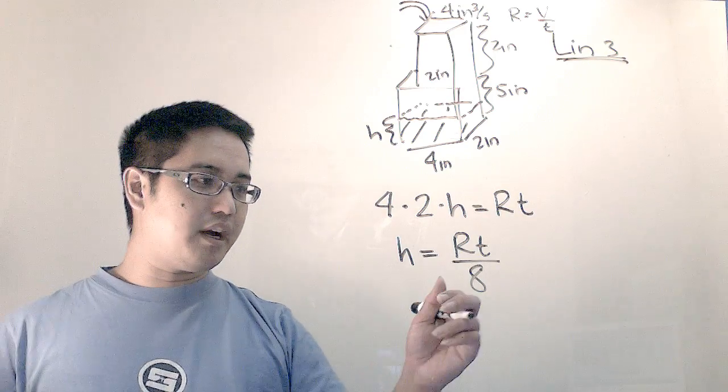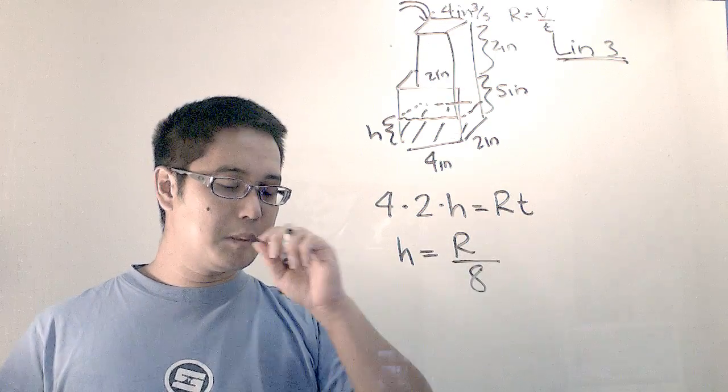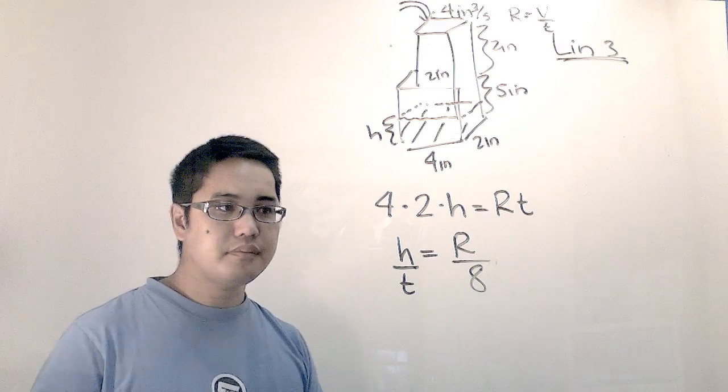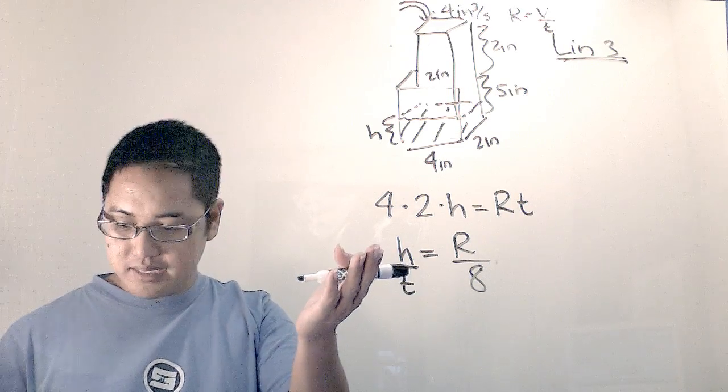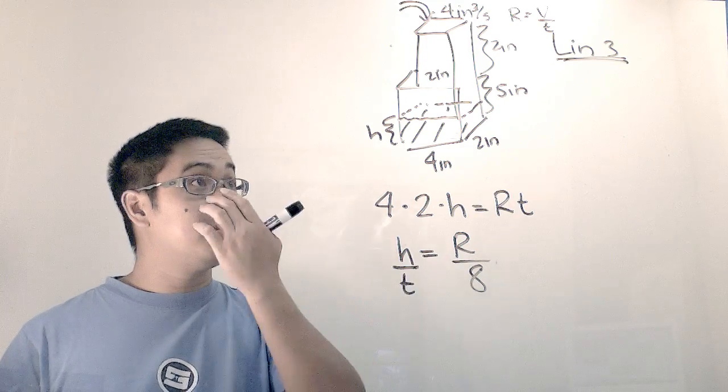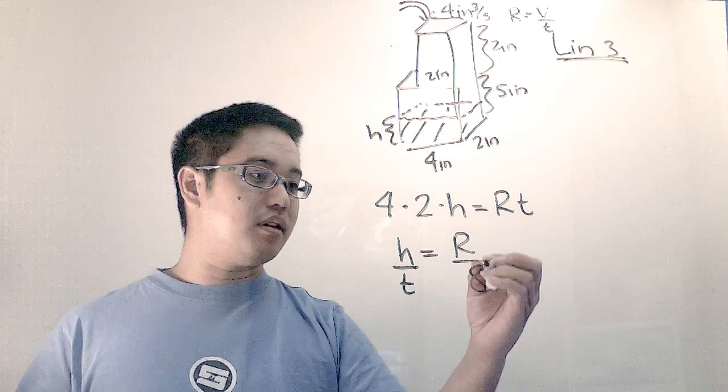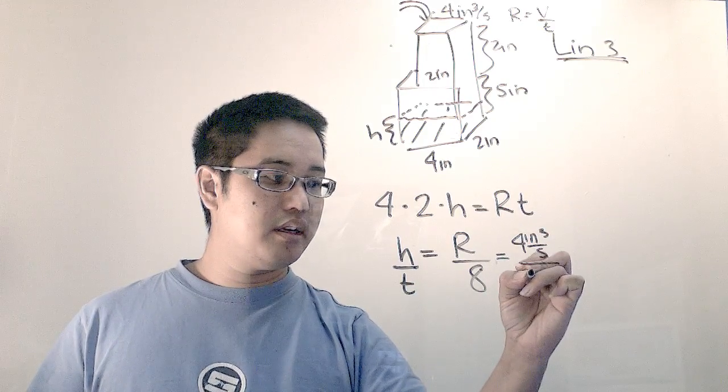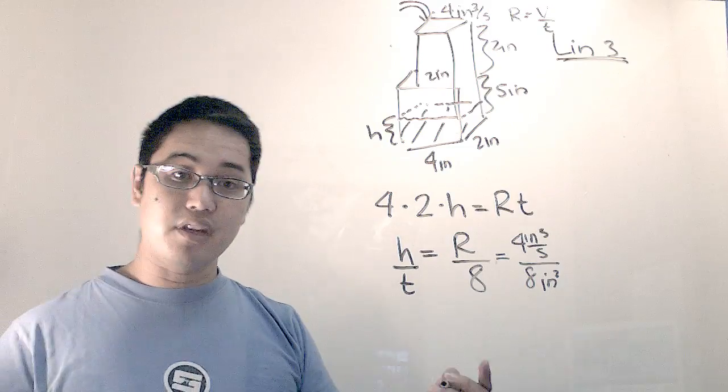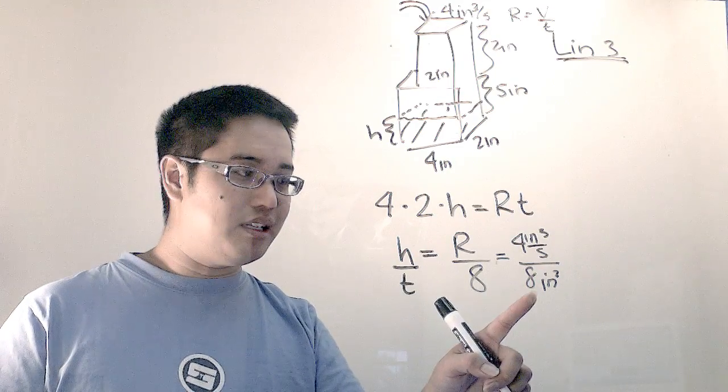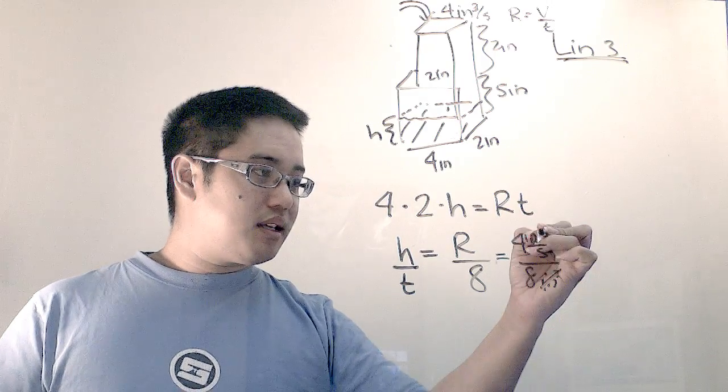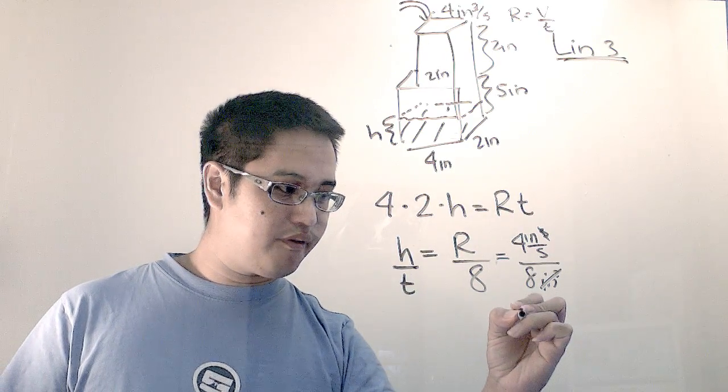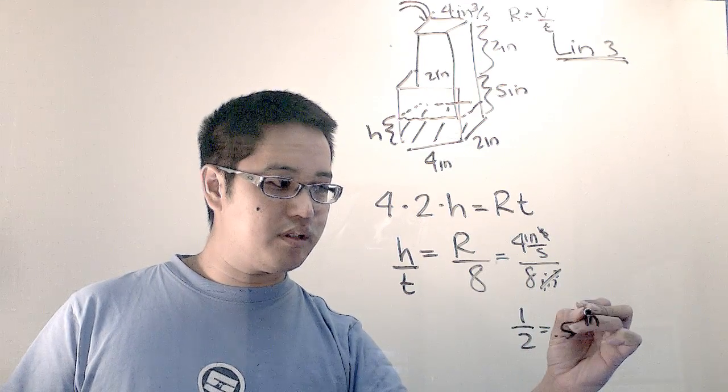So h is equal to rt over 8. So that's my height. If I want to figure out my height per second, I would just divide both sides by t. And that's my height per second. That's how fast this thing fills up per second is equal to, well, the rate divided by 8 inches squared. So this would actually be 4 inches cubed per second divided by 8 inches squared. The reason why I have inches squared is because I have 4 inches times 2 inches, that gives me 8 inches squared. Two of these cancels out with one of those and I get inches per second, which is good because that's what I was looking for. And the answer is 1.5 inches per second.